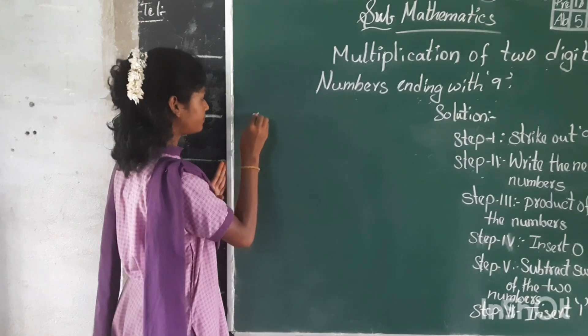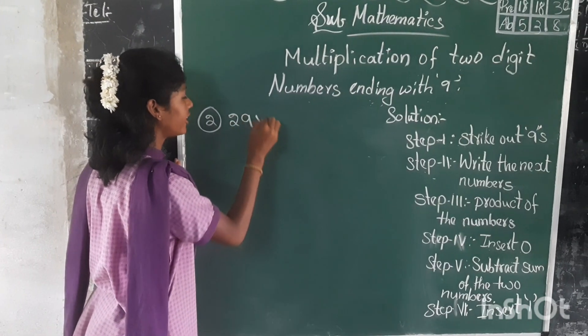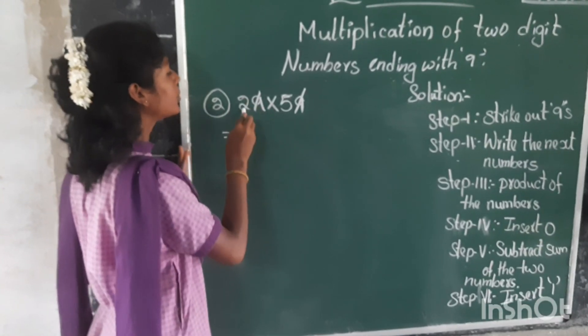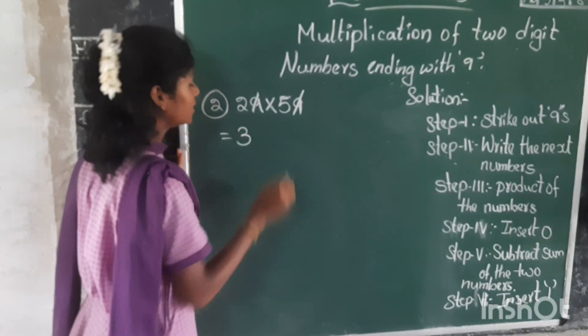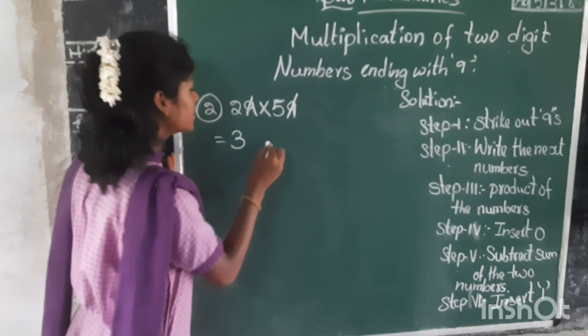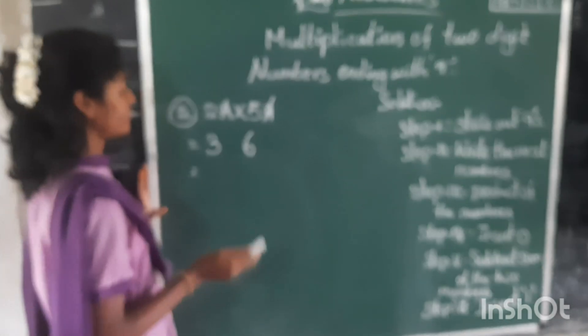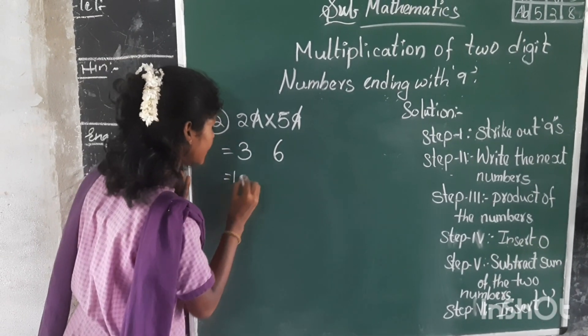Let's go to the second example. The second example is 29 into 59. The first step: strike out the 9s. The second step: write the next numbers of 2 and 5. What is the next number of 2? 3. What is the next number of 5? 6. The third step: find the product of these two numbers. What is the product? 18.